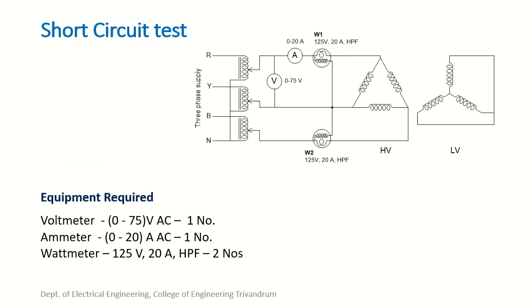Next is the short circuit test. The connections are done on the HV side and the LV side is short-circuited. The ammeter range is chosen to read the rated current of 10.8 ampere, so it is chosen as 0–20 ampere. The voltmeter range is chosen as 0–75 volt, which is comparatively low, because under short circuit condition a small voltage is sufficient to circulate the rated current. The wattmeters are HPF wattmeters with ranges of 125 volt, 20 ampere.